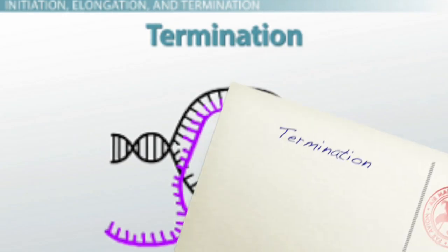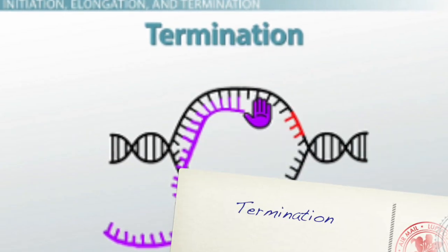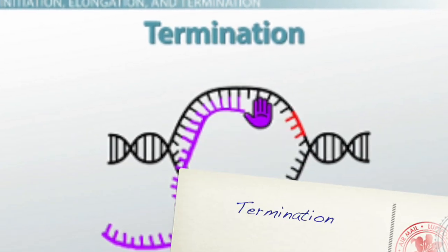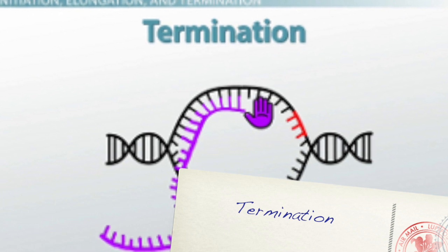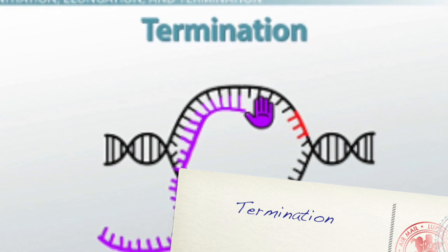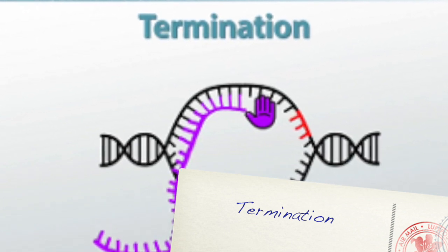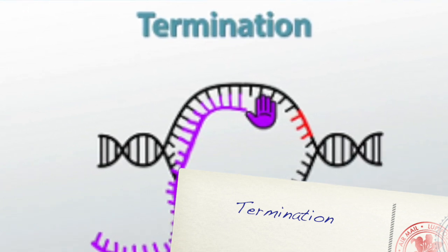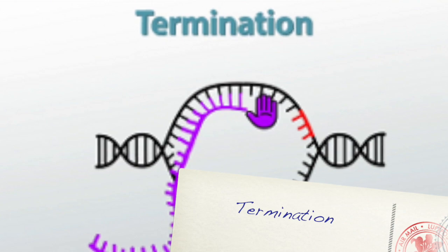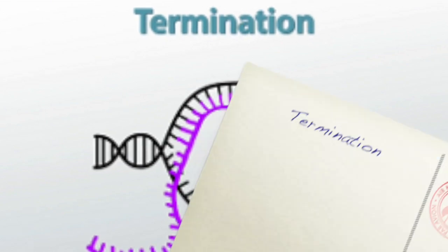The final step of transcription is termination. This is where RNA polymerase reaches a part of DNA called the terminator and stops transcription.